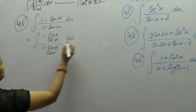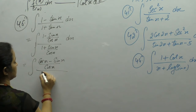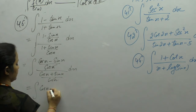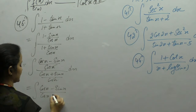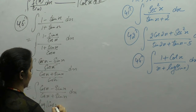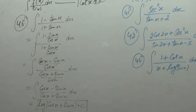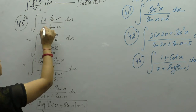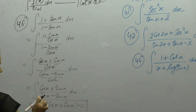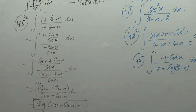log x upon cos x — take cos x as LCM. We get (cos x - sin x) upon (cos x + sin x). Derivative of cos is minus sin and derivative of sin is cos, so it is of form f'(x)/f(x), giving log of (cos x + sin x) plus c. Here we have plus sin and here minus: derivative of cos is minus sin and derivative of sin is cos, so we have minus log of (cos x + sin x) plus c.